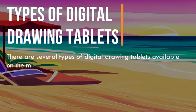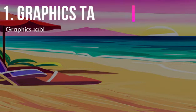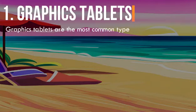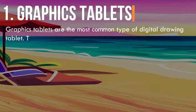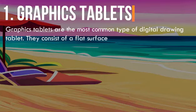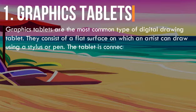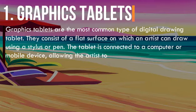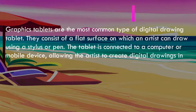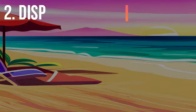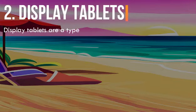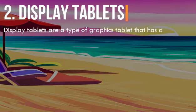Here are some of the most common types. 1. Graphics tablets: Graphics tablets are the most common type of digital drawing tablet. They consist of a flat surface on which an artist can draw using a stylus or pen. The tablet is connected to a computer or mobile device, allowing the artist to create digital drawings in real time.